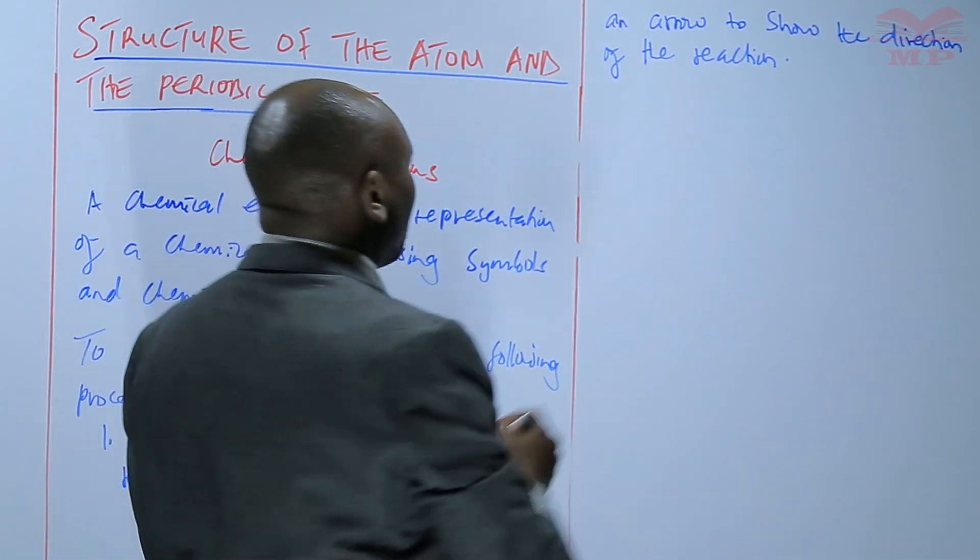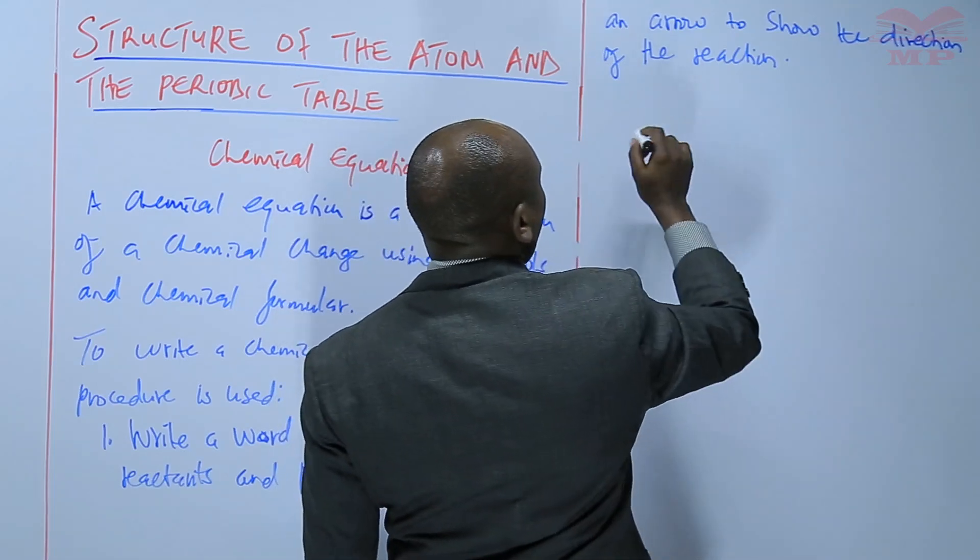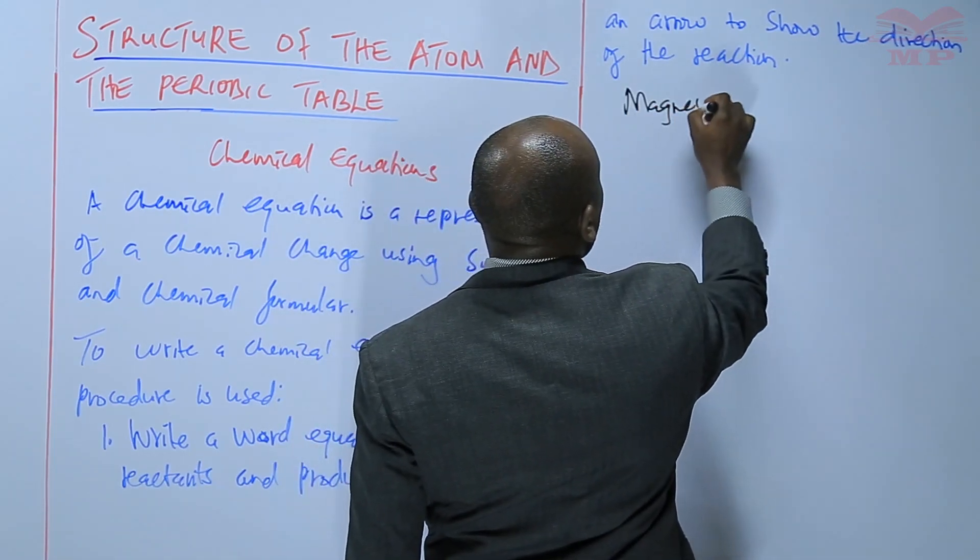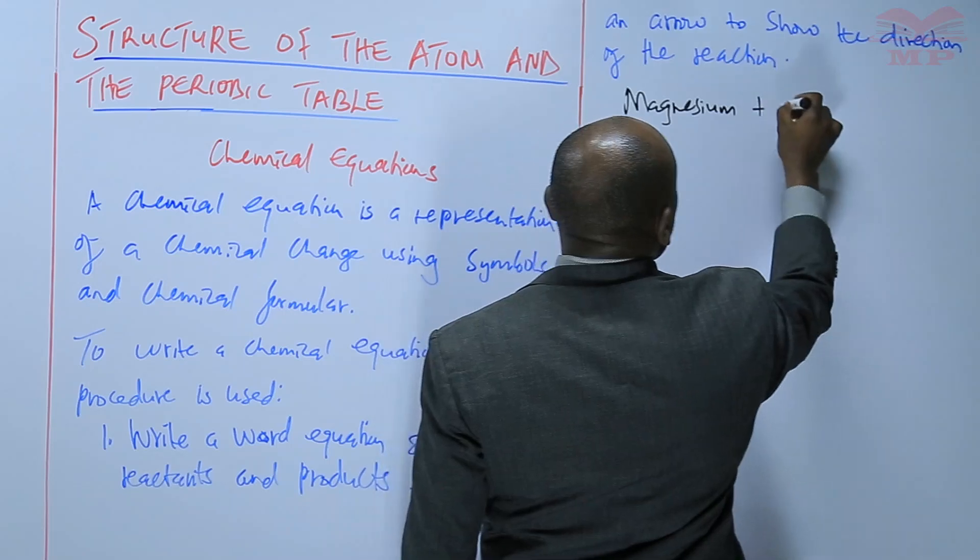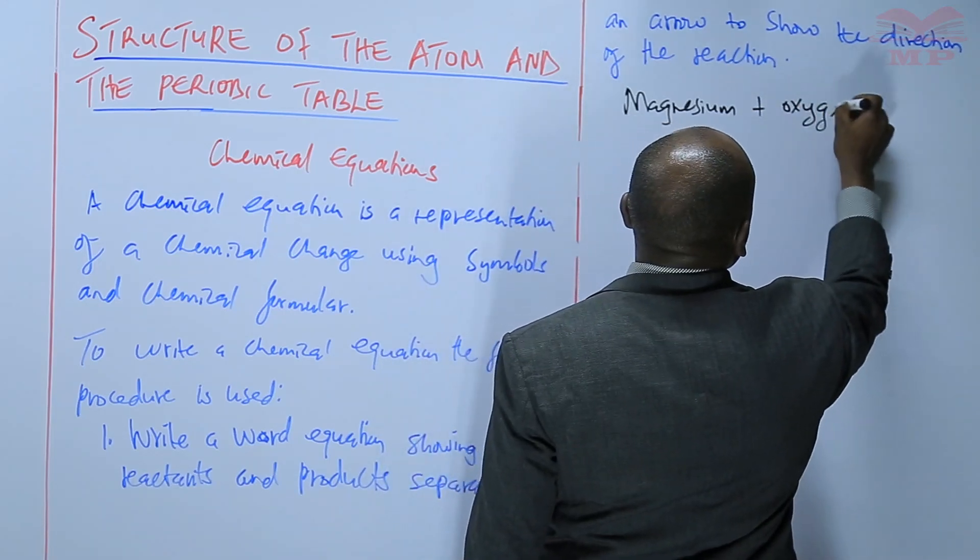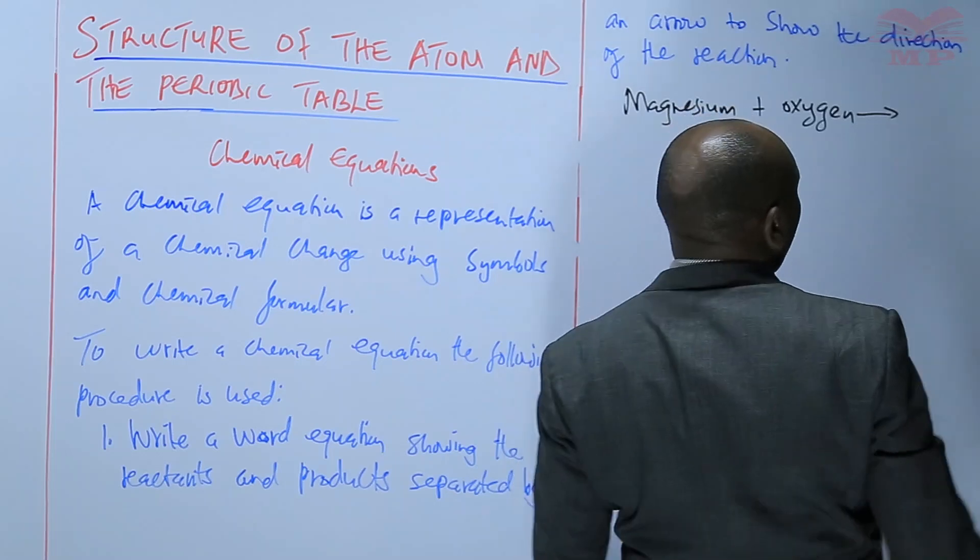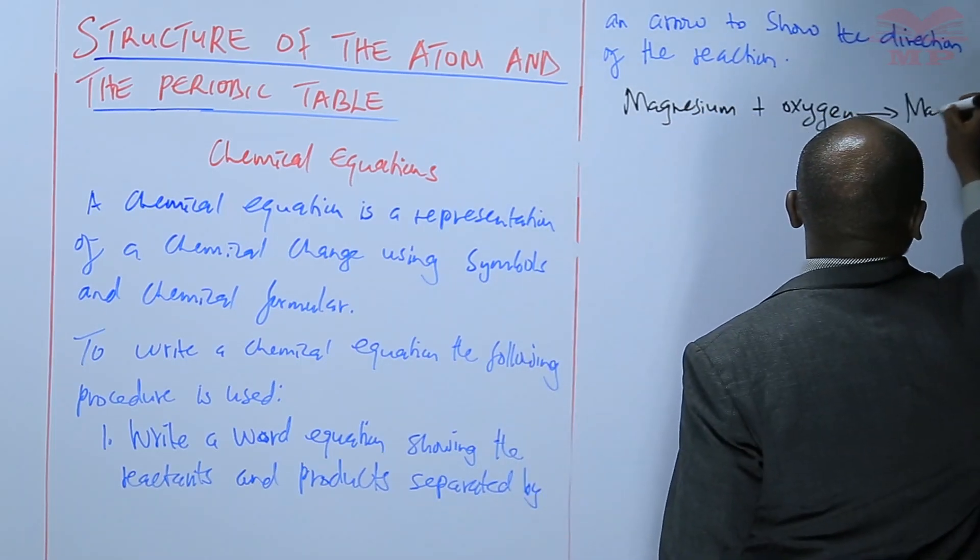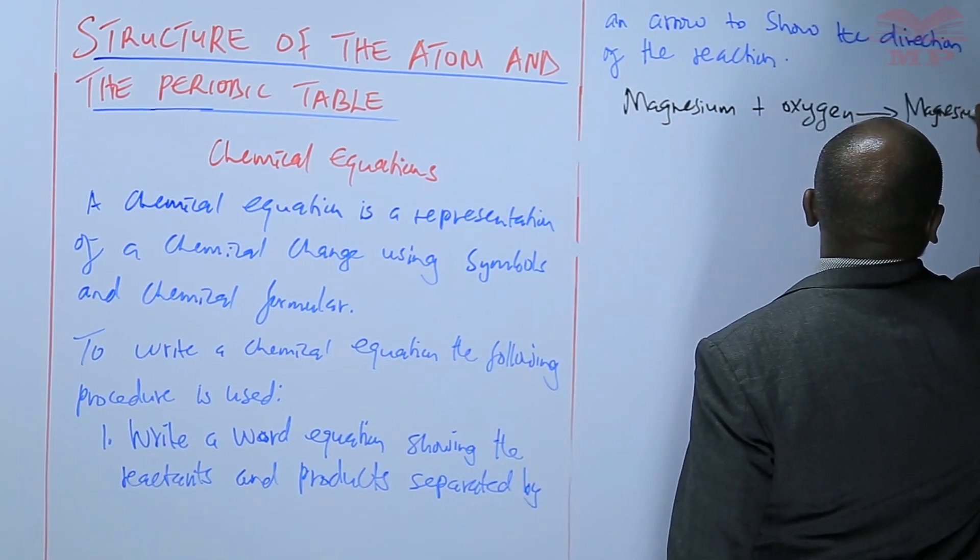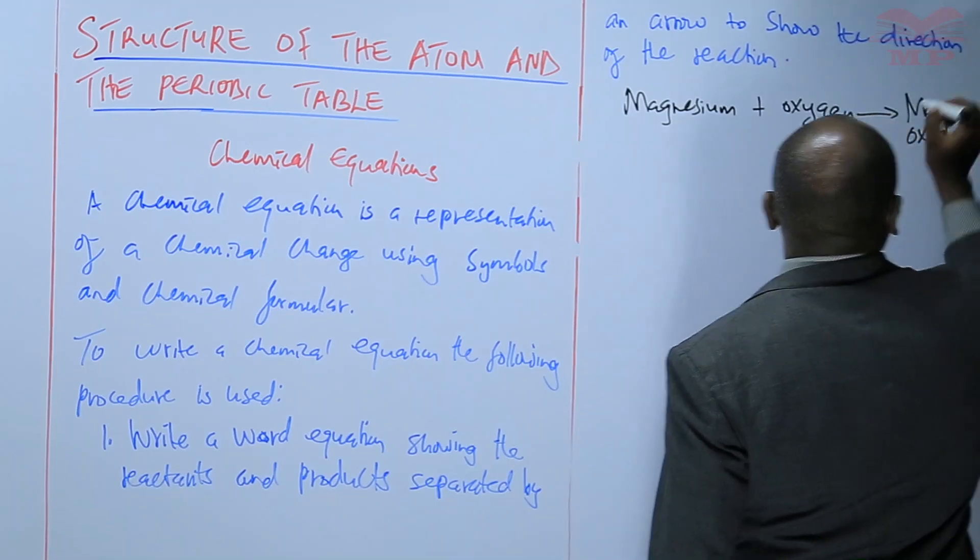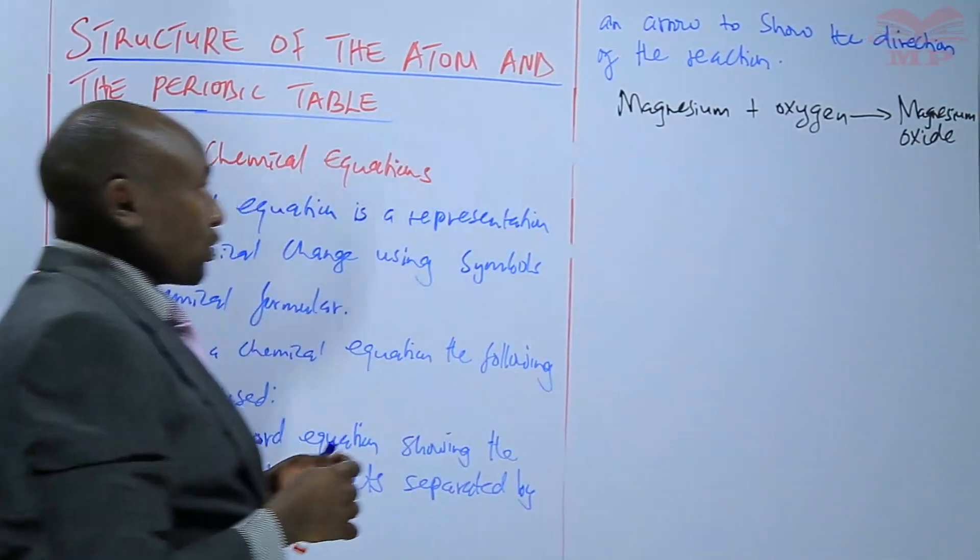So we write a word equation first. We'll take an example: magnesium plus oxygen gives magnesium oxide. That arrow shows the direction of the reaction.